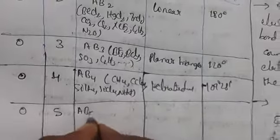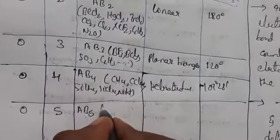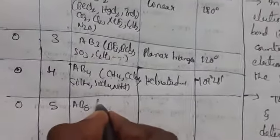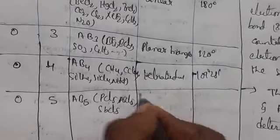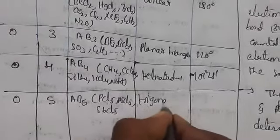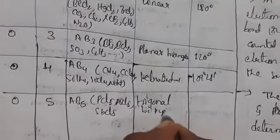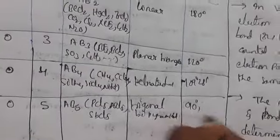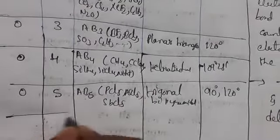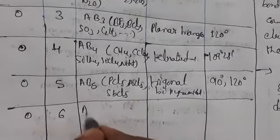With zero lone pairs and five bond pairs, the molecule type is AB5 and the shape is trigonal bipyramidal. Examples include PCl5, AsCl5, and SbCl5. It has two bond angles: 90° and 120°, and consists of two positions — axial and equatorial.